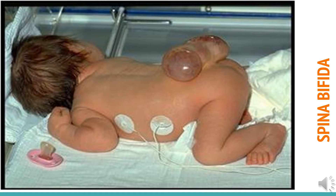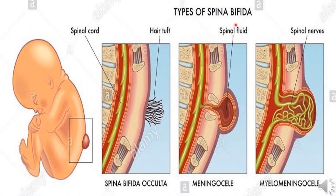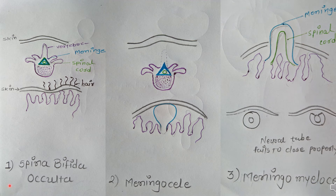Spina bifida is a birth defect in which the developing baby's spinal cord fails to develop properly. There are three types of spina bifida. The first is spina bifida occulta. The second is meningocele. The third is myelomeningocele, also known as meningomyelocele. Type one is spina bifida occulta. In the first picture on the left side, the spinal cord and meninges do not protrude and remain under the vertebra. No spinal cord is damaged. It is hidden because prenatal tests often do not detect it. It is the most common, least severe, and mildest type of spina bifida.